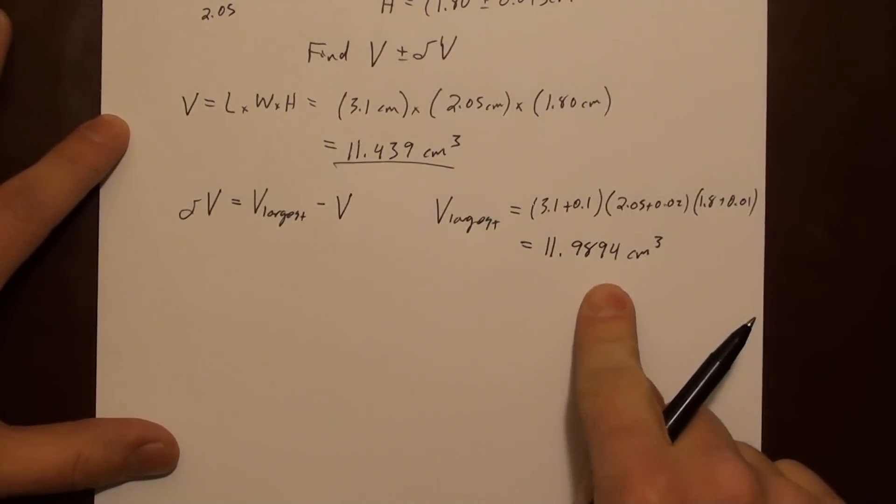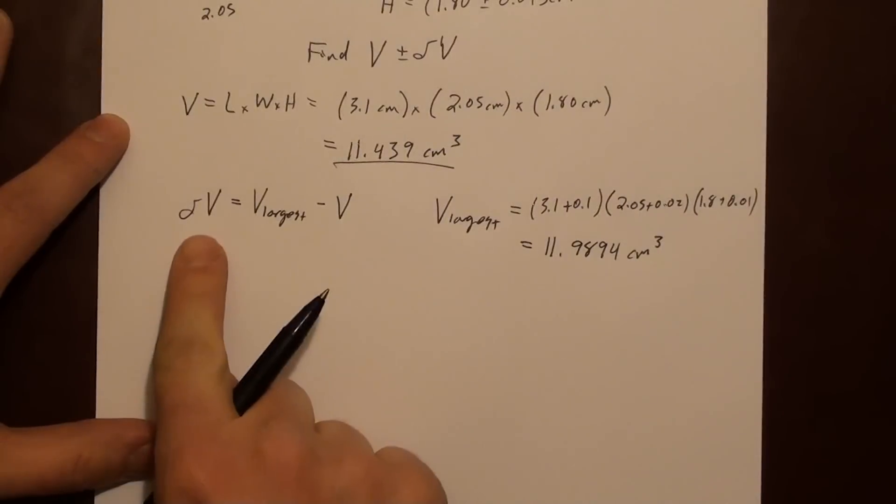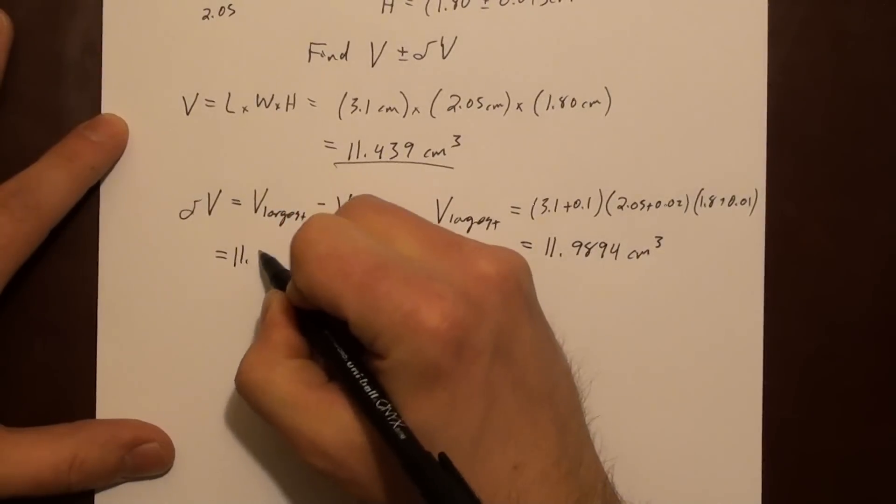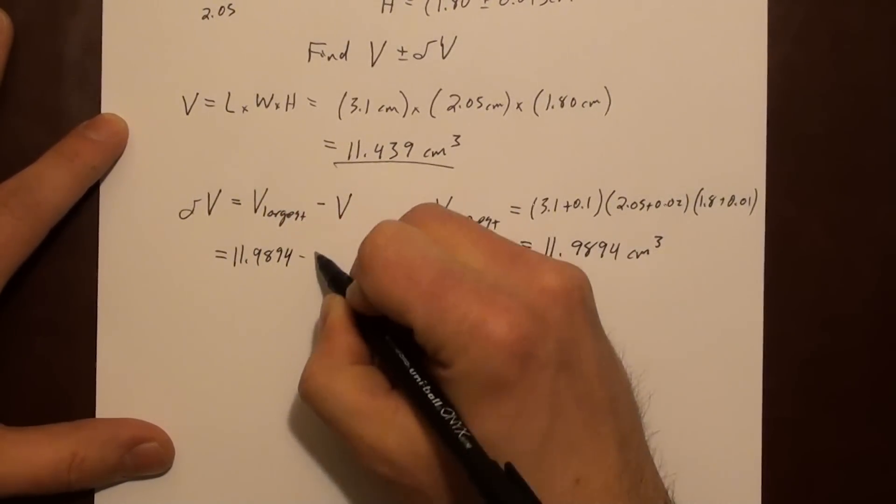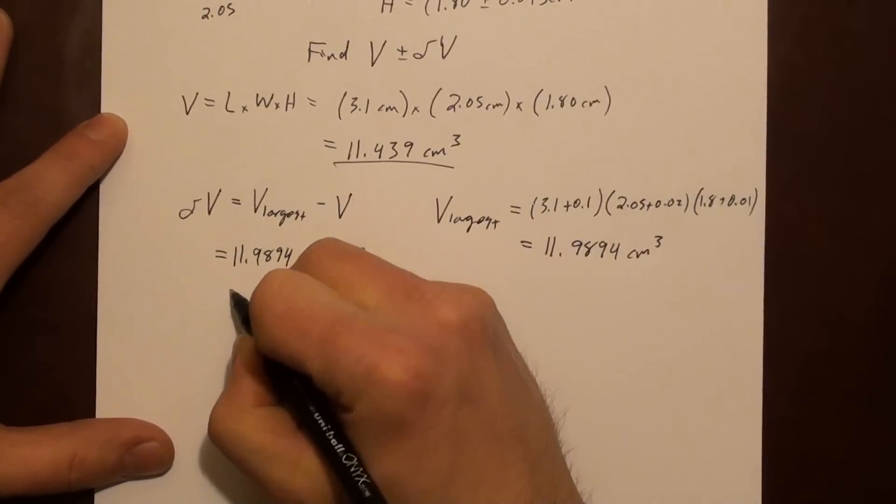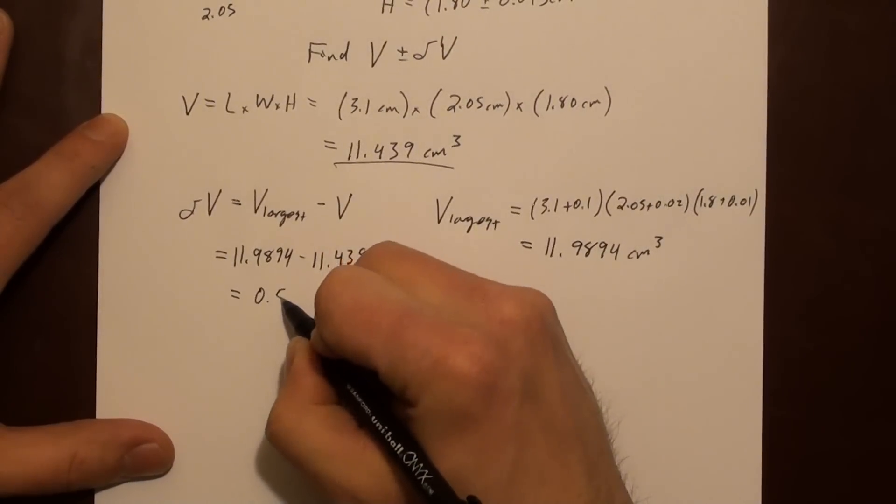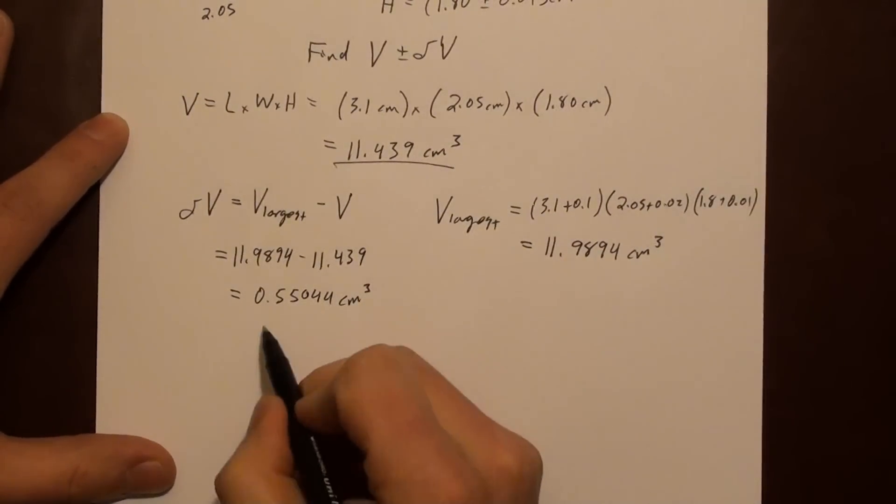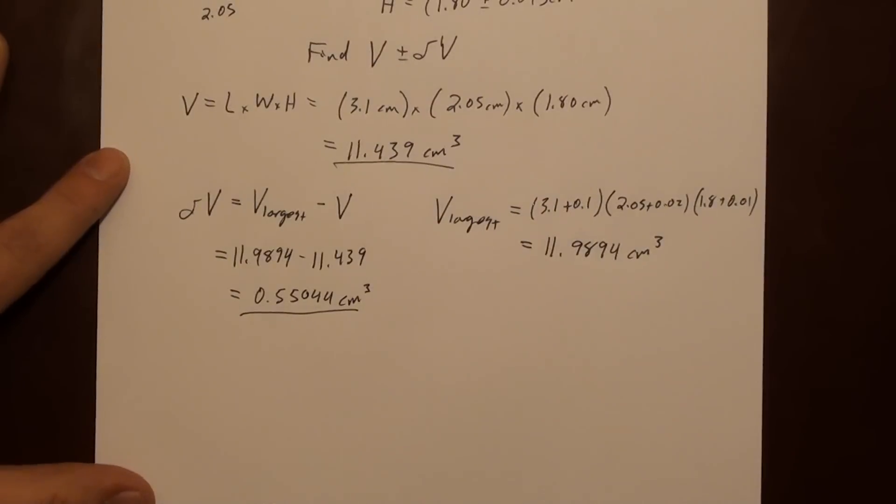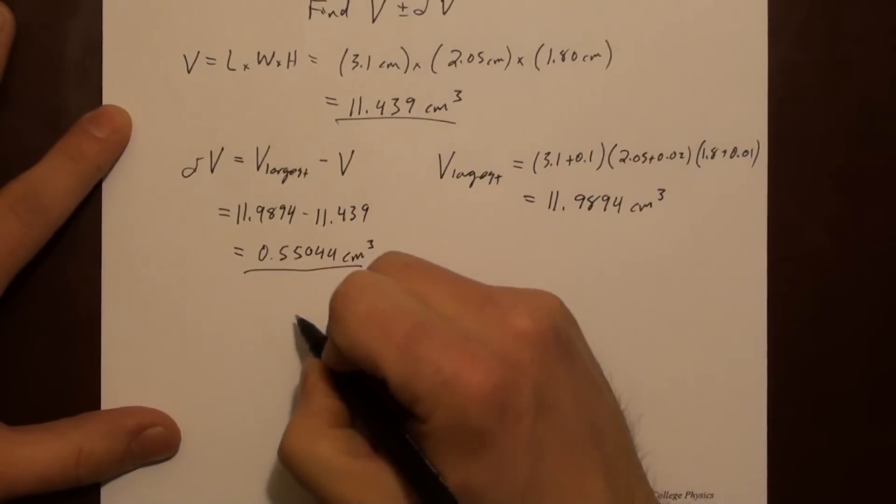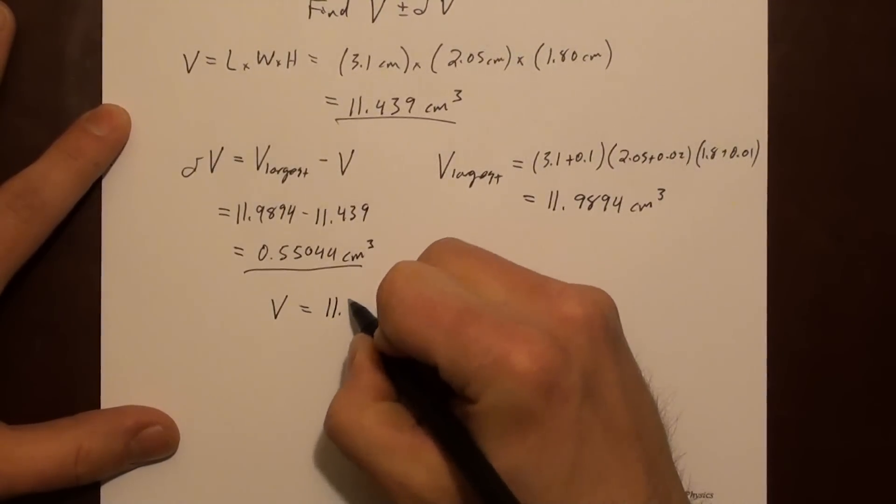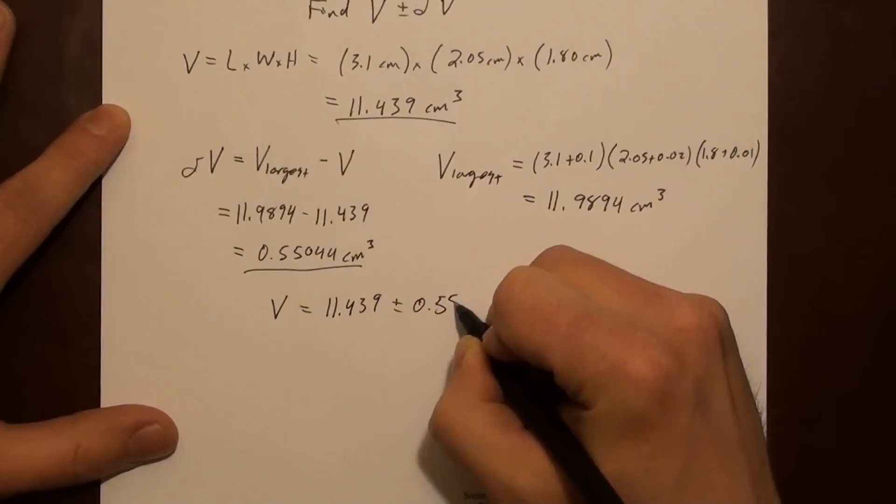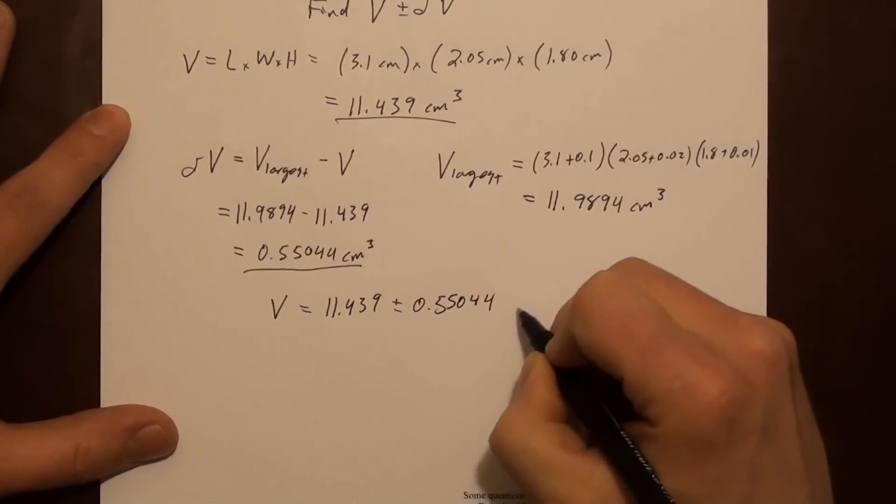So now we can use that largest value and the actual value to find a difference and come up with the error. So we'll plug those in here, 11.9894 minus 11.439, and you end up with 0.55044 cubic centimeters. That's the error. So we could write our result as V equals 11.439 ± 0.55044 cubic centimeters.